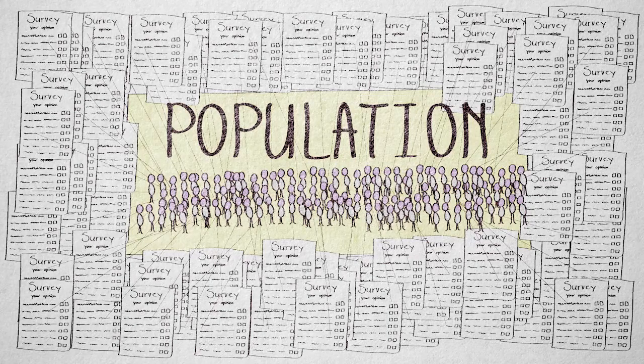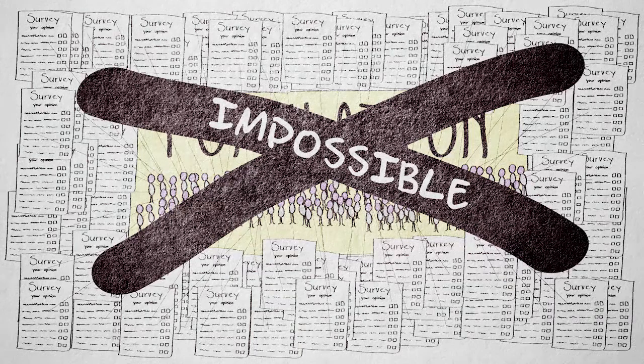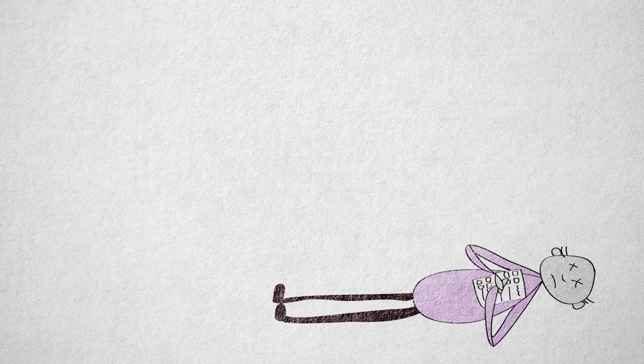For universalistic hypotheses, it's simply impossible to measure the entire population because it consists of all people everywhere, including all people who are long dead and all people who have yet to be born.